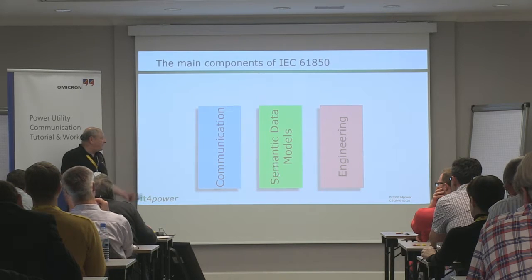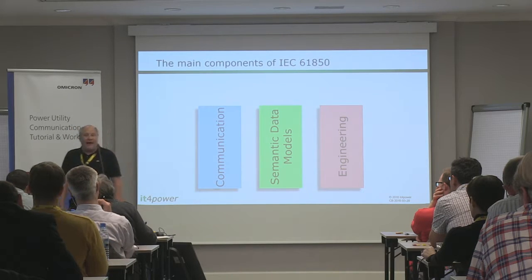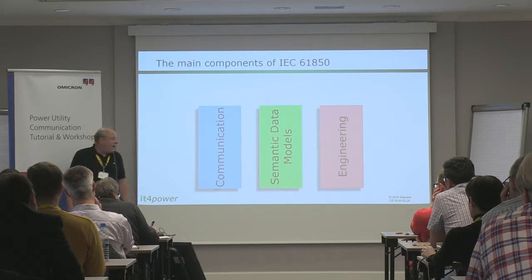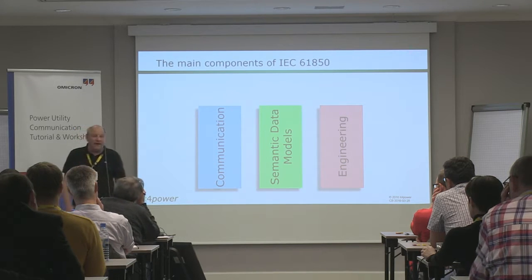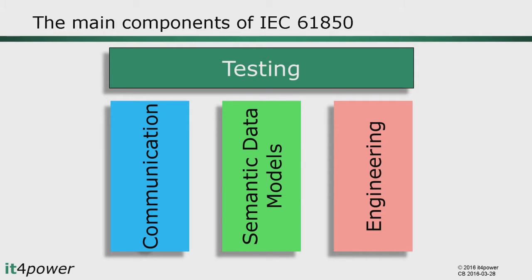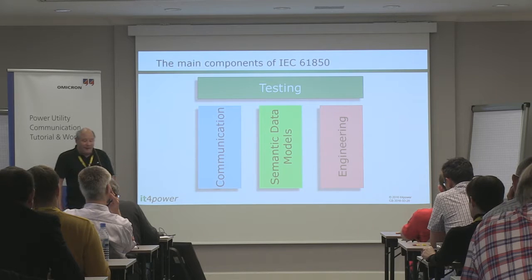61850 of course deals with communication, but it also includes the definition of semantic data models. It not only covers how you transmit information from A to B, but also what exactly that information is — defining semantic objects and data structures used in the power world. The third key element is the complete engineering process behind 61850, which allows automated configuration of your system with different tools talking to each other, and also enables automated testing. On top of these three elements, the standard includes specifications for conformance testing of components developed for 61850.